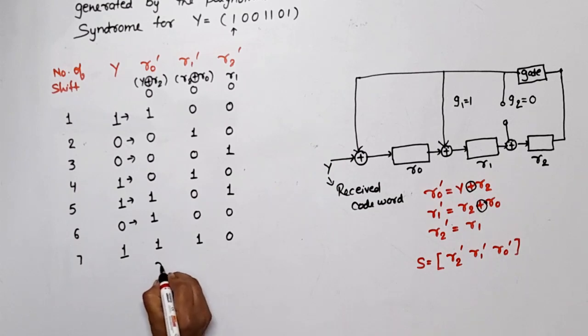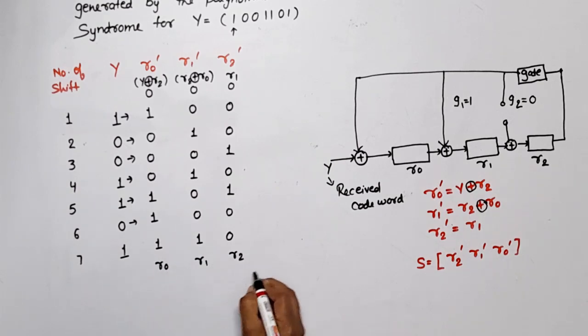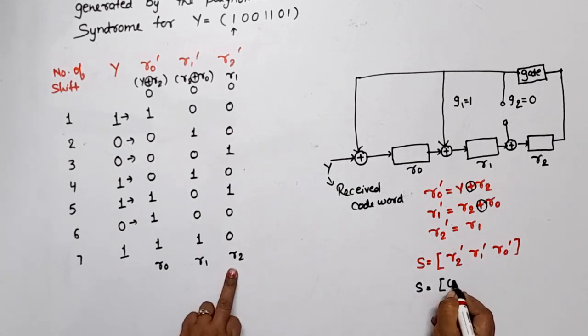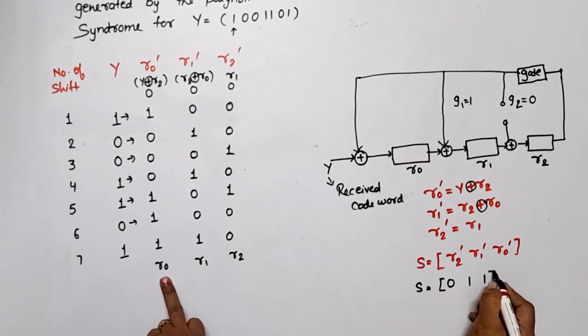Now, who will be R₀, R₁, R₂. So, what is the syndrome? Syndrome, S = first, we will write R₂, then we will write R₁, then we will write R₀. So, this is the syndrome. Thank you so much. If you still have any doubt related to this question, please write down in comment section. Thank you.